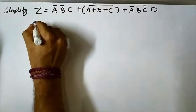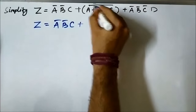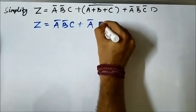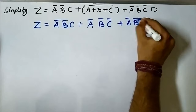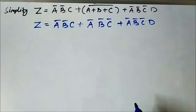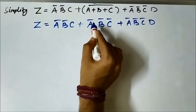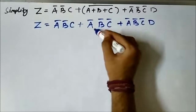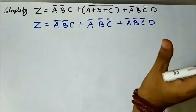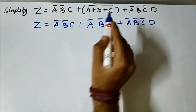So z equals ā·b̄·c plus ā·b̄·c̄ plus ā·b̄·c̄·d. In the last two terms, ā·b̄·c̄ is common. We can take ā·b̄·c̄ as common from those two terms, giving ā·b̄·c plus ā·b̄·c̄·(1 + d).